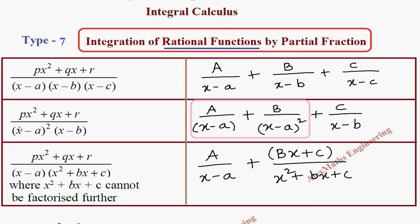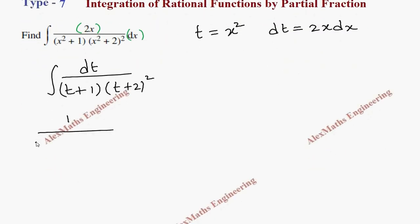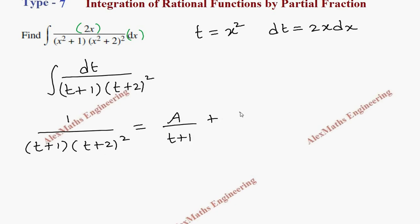For a repeated factor, we follow the partial fraction rule discussed in the previous video: when you have (x − a)², it becomes A/(x − a) + B/(x − a)². So for 1 / [(t+1)(t+2)²], the first factor is single so we write A/(t+1), and the repeated factor gives B/(t+2) + C/(t+2)².